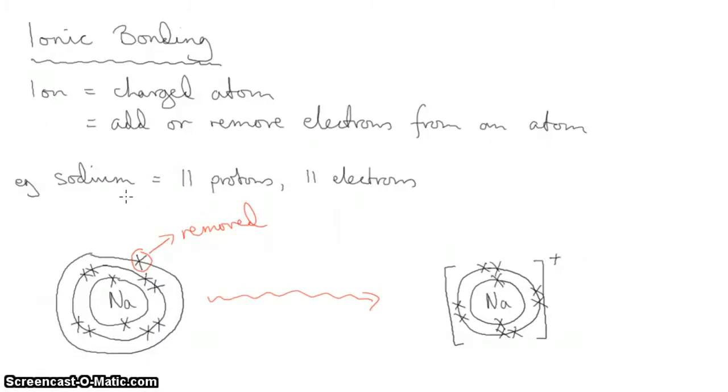Well, sodium over here has 11 protons and it has 11 electrons. Over here, sodium ion still has 11 protons because it is sodium. That is defined by having 11 protons.